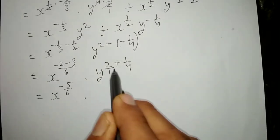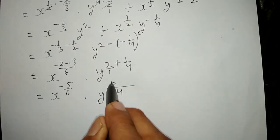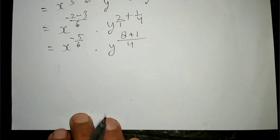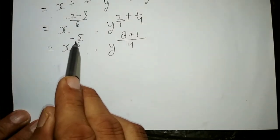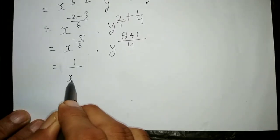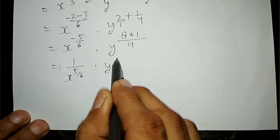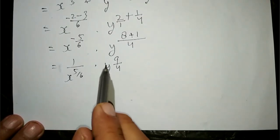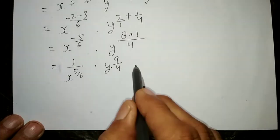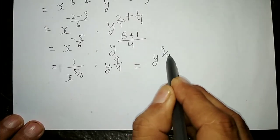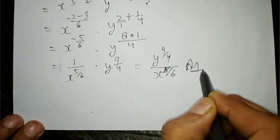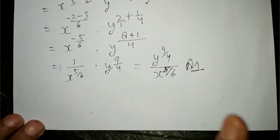Negative power को positive में change करने के लिए: one upon x to the power five upon six into y to the power nine upon four. इसका one को y to the power nine upon four से multiply करेंगे — तो answer आएगा y to the power nine upon four upon x to the power five upon six. वो positive real numbers में होना चाहिए।